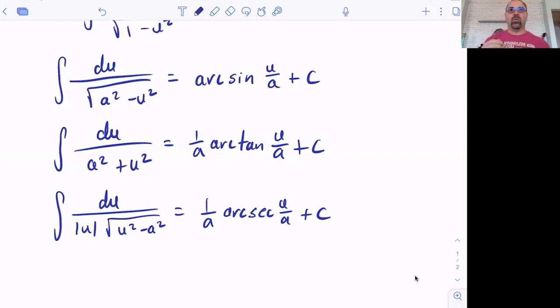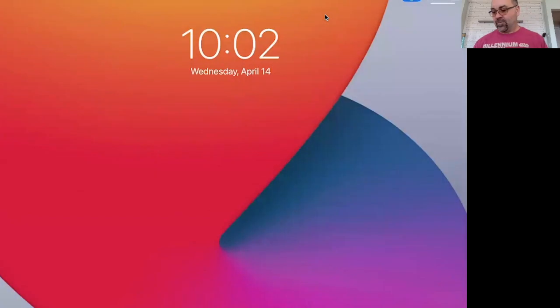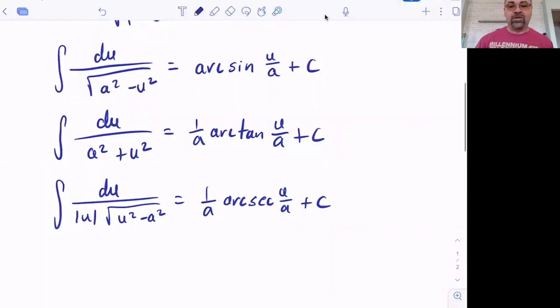When you encounter an integral out in the wild, it's not nice and neatly tucked in a section on inverse trig function. So it's hard to know exactly how do we approach that integral. And even calculus teachers, right? We've been doing calculus for a long time. Ms. Hoagie is considerably younger than I am, but she's probably way better at calculus than I am, even though I've been doing calculus for probably more years and I still screw this up. So there's lots of reasons why integration is difficult.